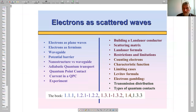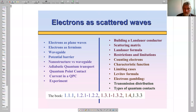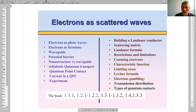The course in quantum transport is about how electrons traverse nanostructures, covering all quantum mechanical effects which can be observed there, including Josephson junctions, qubits, and quantum dots. We will go through a variety of phenomena. The course will consist of lectures given online.